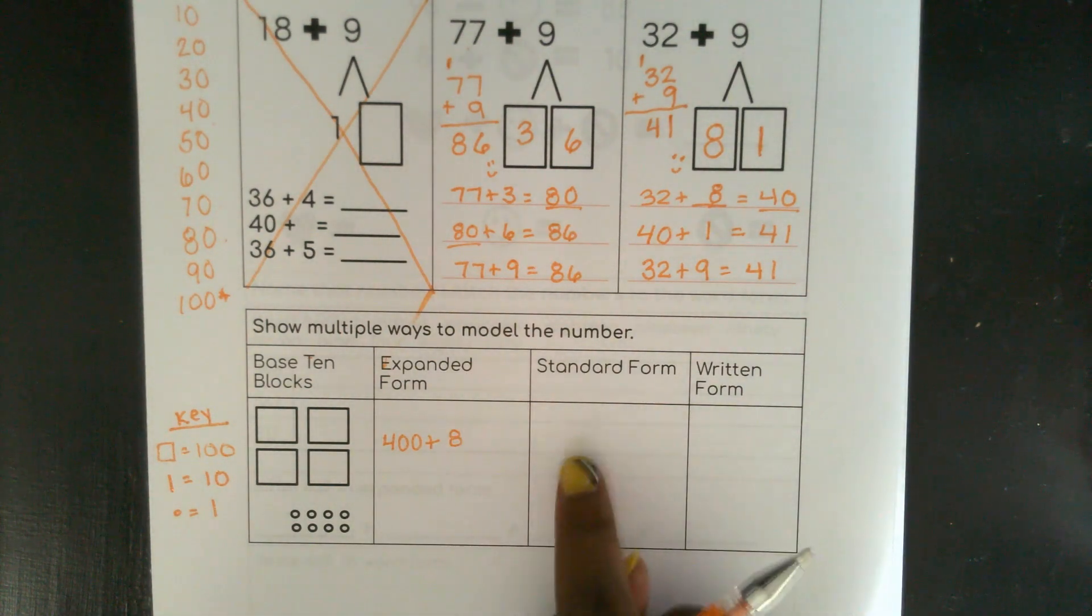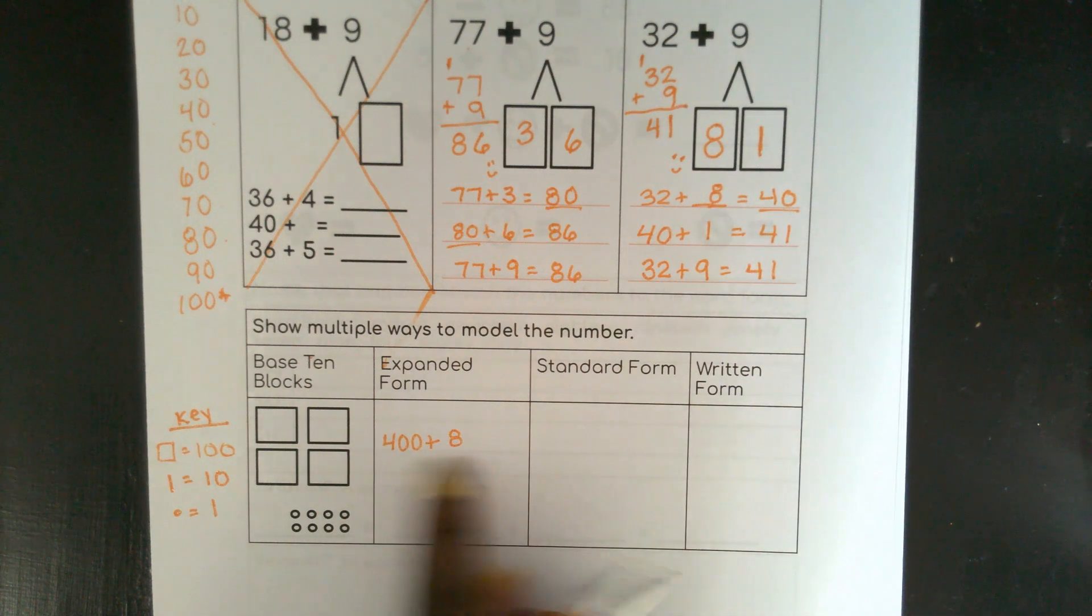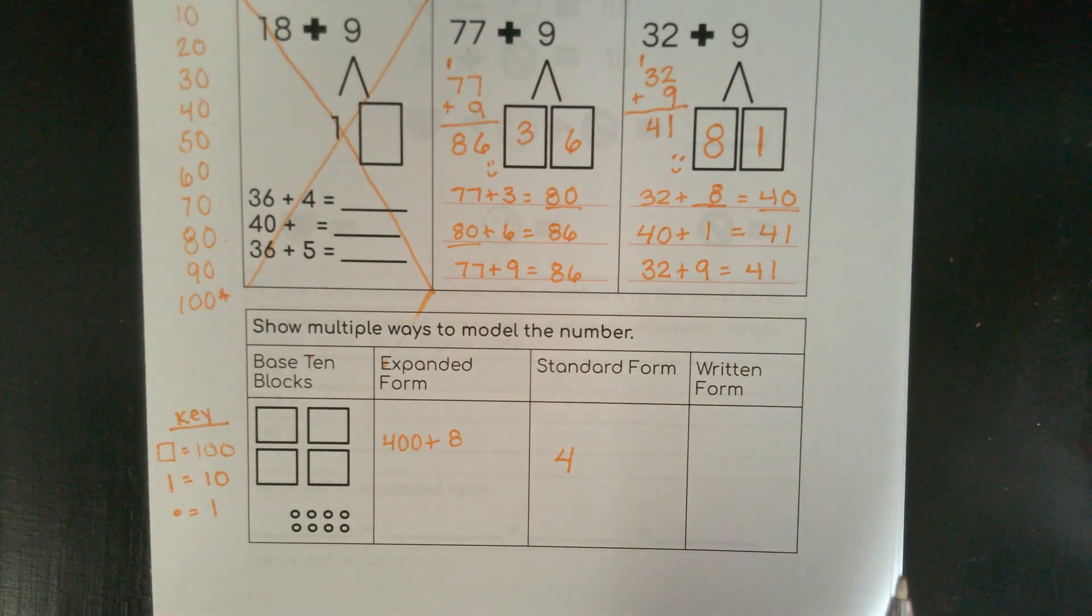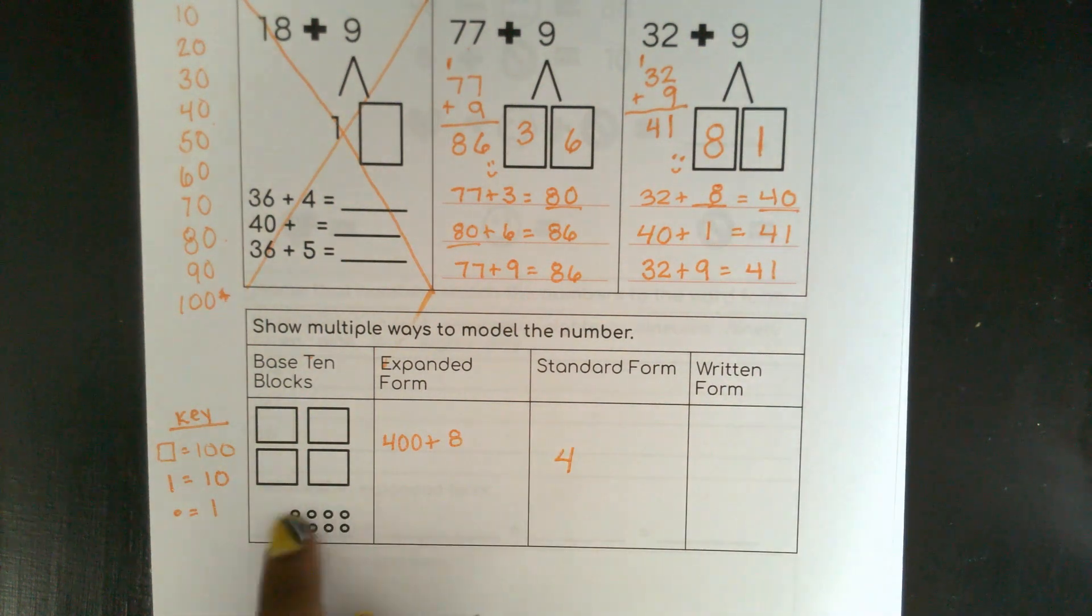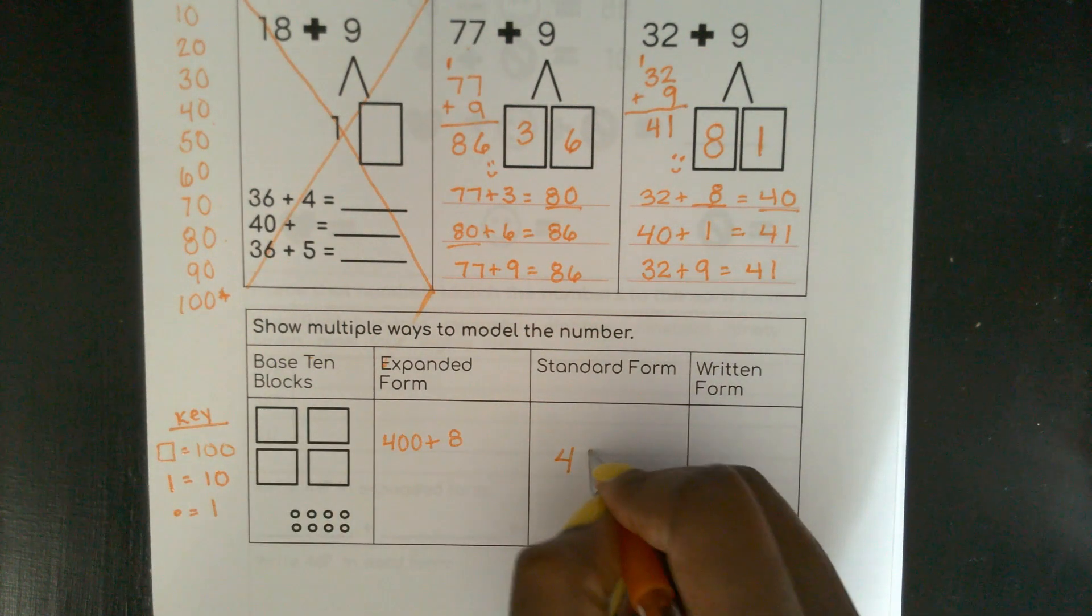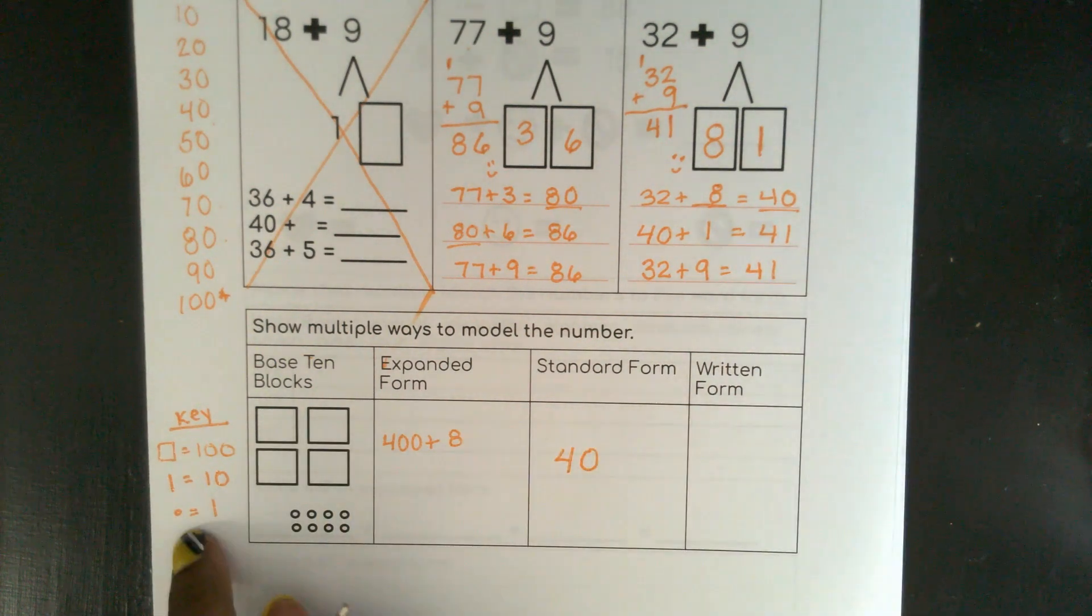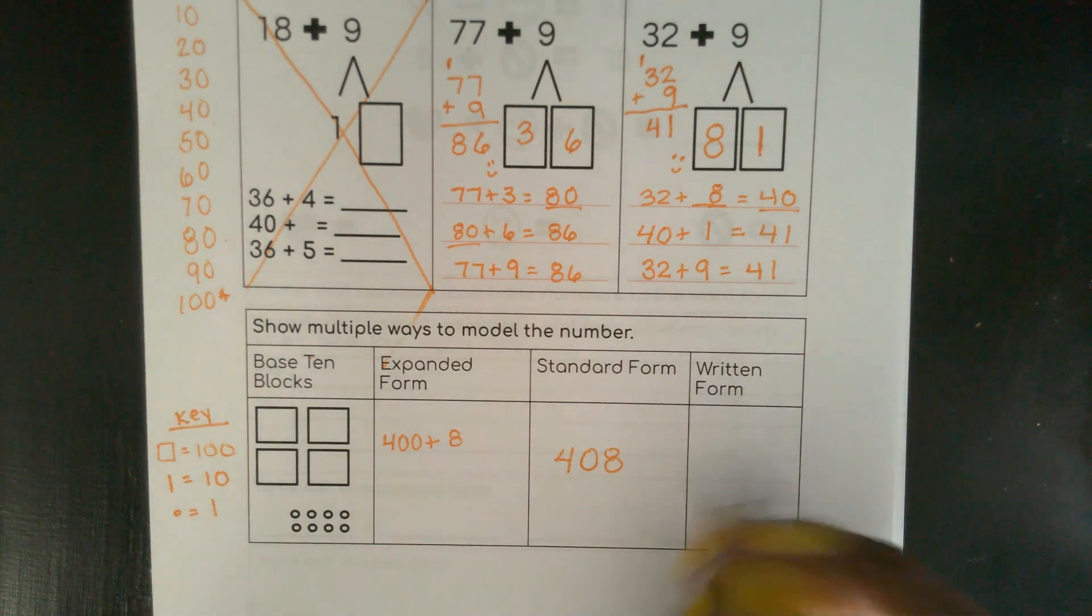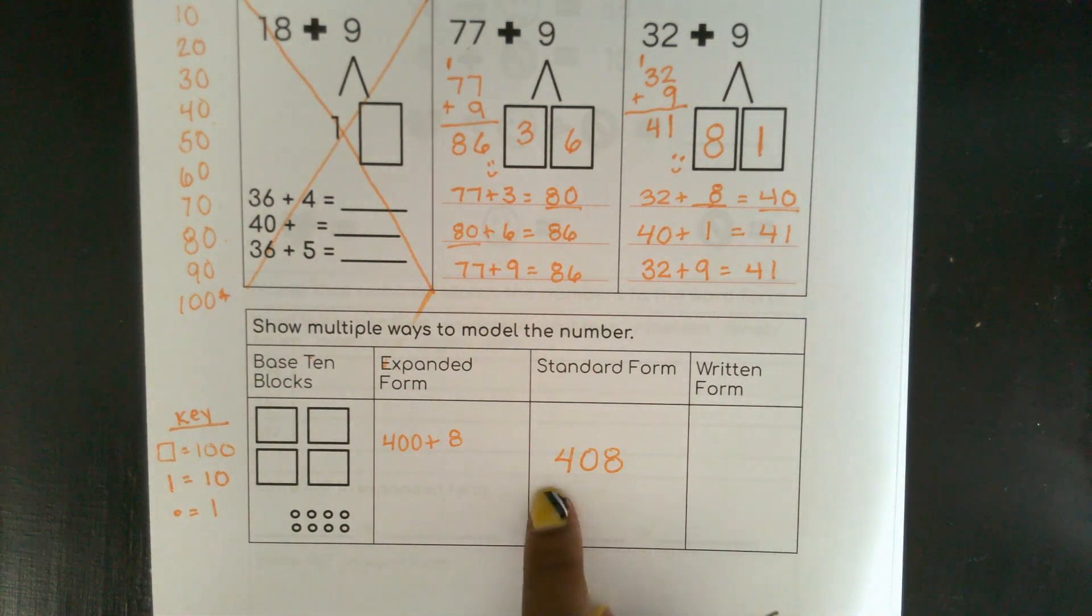So in standard form, what would this number be? 400 plus 8. Well, I would have 4 in the 100s place. I don't have anything in the 10s place, because remember, I didn't have any symbols that look like this. So I have nothing in the 10s place. And then I have 8 in the 1s place.